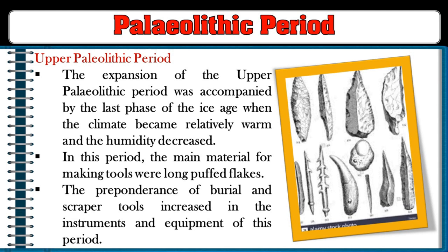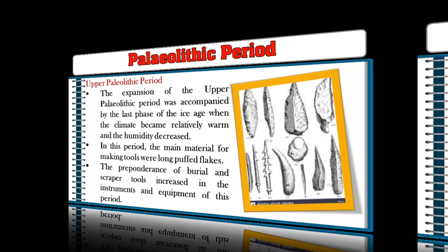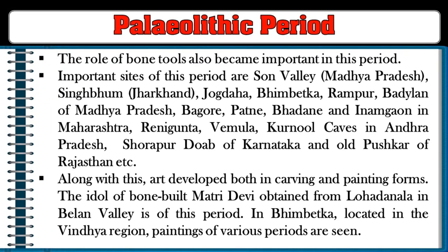The Upper Paleolithic period expanded during the last phase of the Ice Age when the climate became relatively warm and humidity decreased. The main material for making tools was long, prepared flakes. The preponderance of burin and scraper tools increased during this period, and the role of bone tools also became important.